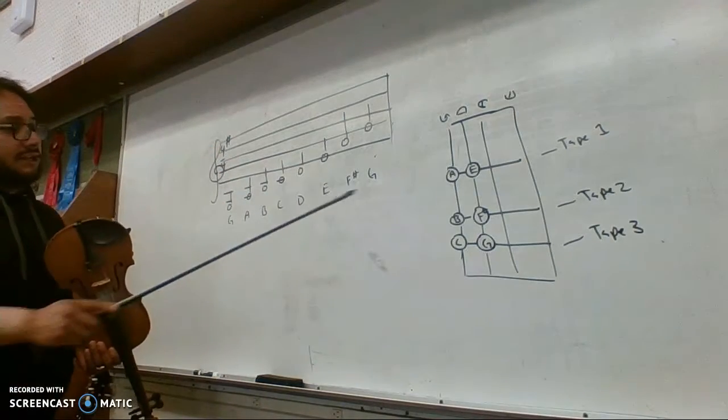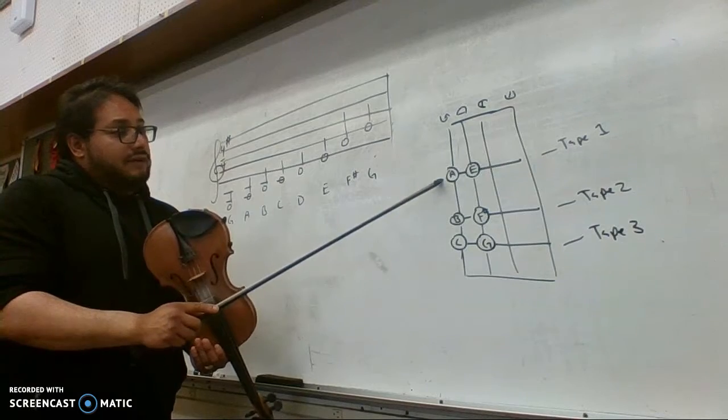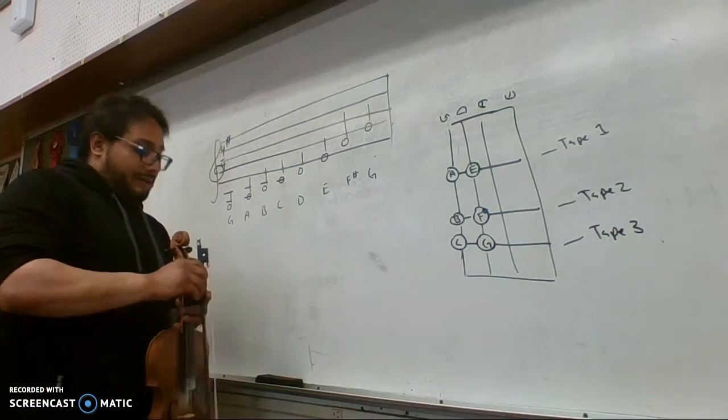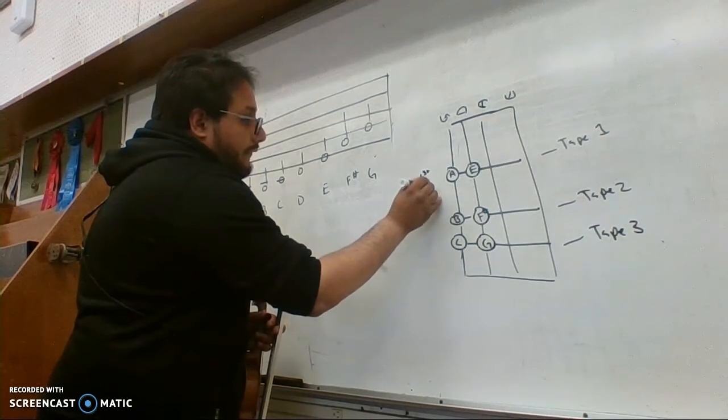We're going to play open, and the next one is A, which is going to be right here on the fingerboard. There's the first tape on the G string, so you're going to put your first finger on the first tape, right here, first finger.